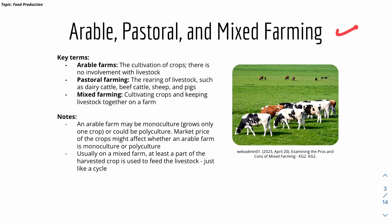Moving on to the types of farming: arable, pastoral, and mixed farming. Arable farms focus on the cultivation of crops with no involvement of livestock. Pastoral farms raise livestock. Mixed farming is the combination of both — cultivating crops and keeping livestock together on the same farm.